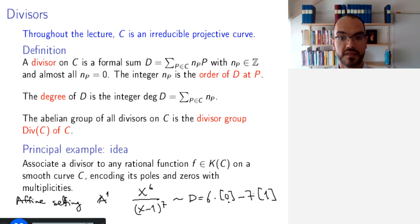So this is the point 0 on the affine line and the point 1 on the affine line. And this function has a zero of order 6 at 0 and a pole of order 7 at 1. If you were dealing with a projective setting, we have to bear in mind the point at infinity. This is why in the examples, I am using the affine setting because the ideas come across easier that way.